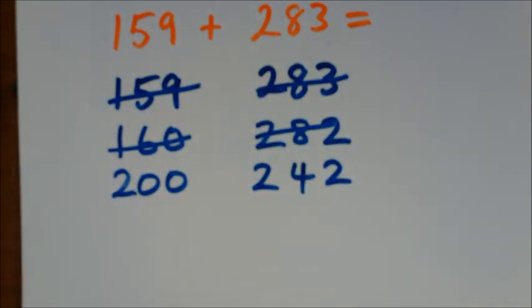Just by the way, if we'd have rounded 160 down to 100, sometimes that helps, but it wouldn't have done this time. Because then we'd have had to put that 60 somewhere, we'd have had to put it on the 282, and that's a bit more complicated. So we chose the easiest option today by rounding 160 up. It'll work better with the numbers we've got.